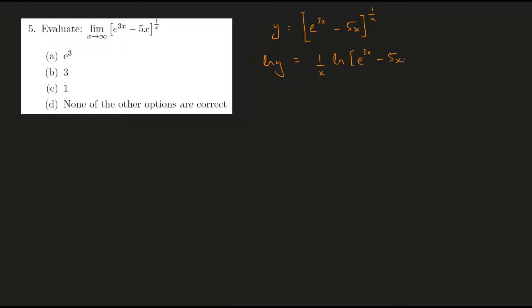Using the properties of log, I have one by x over here in the front. This can then be written as y equals e to the power of one by x into ln e to the power of 3x minus 5x.